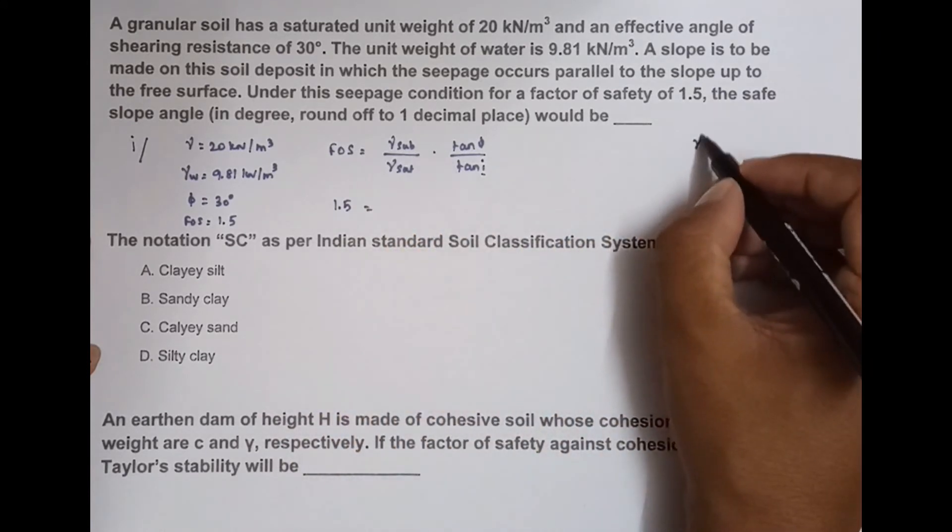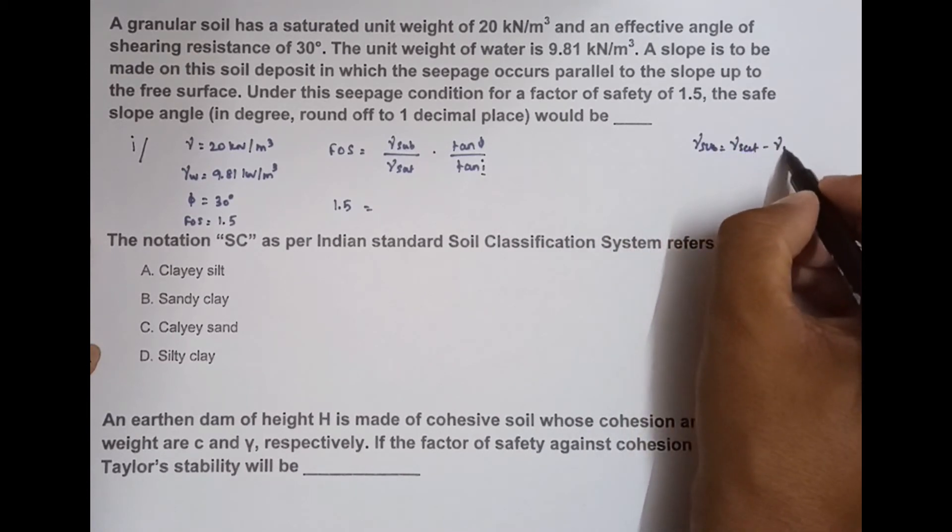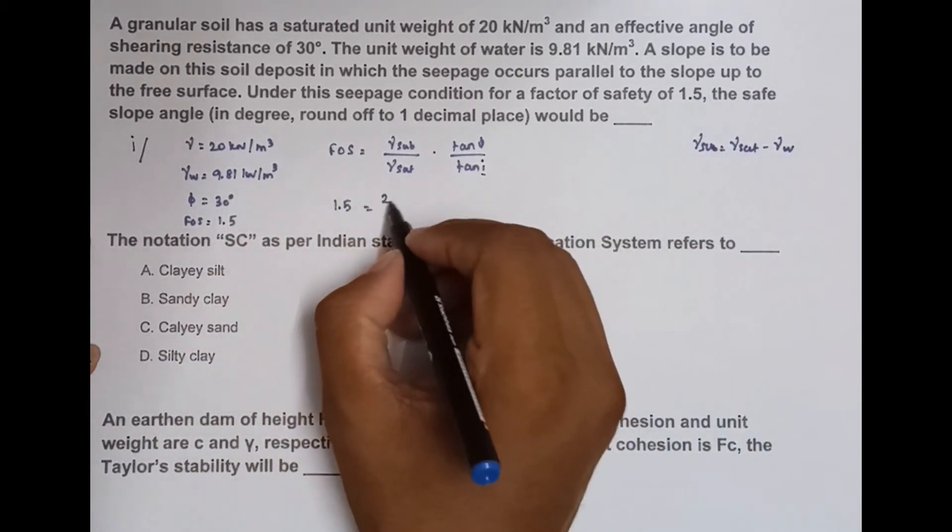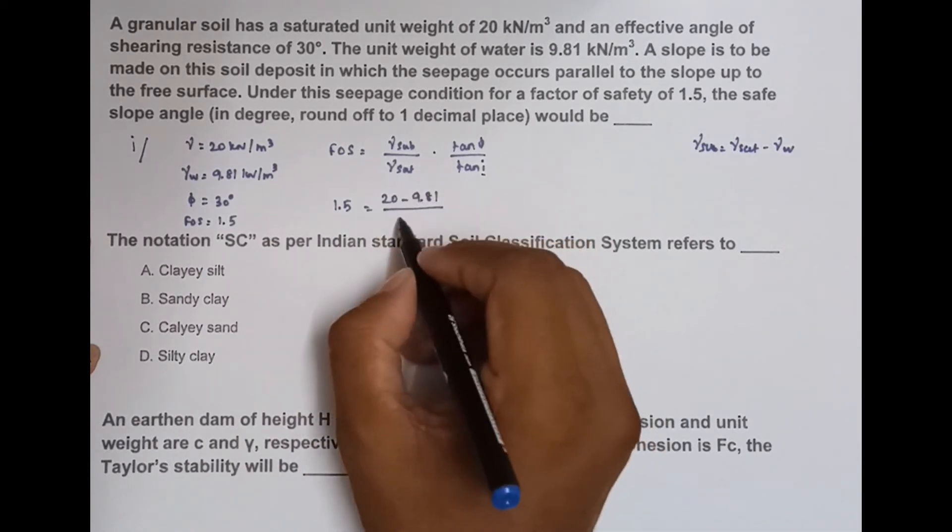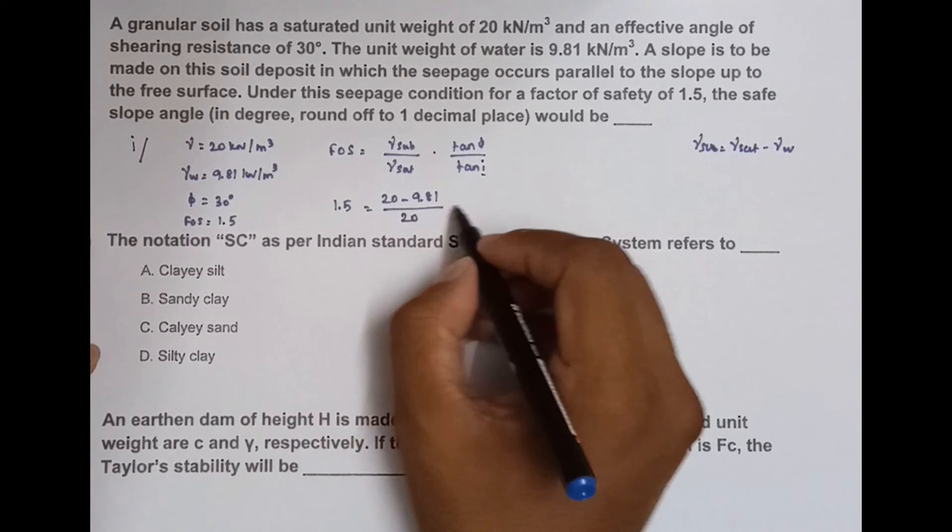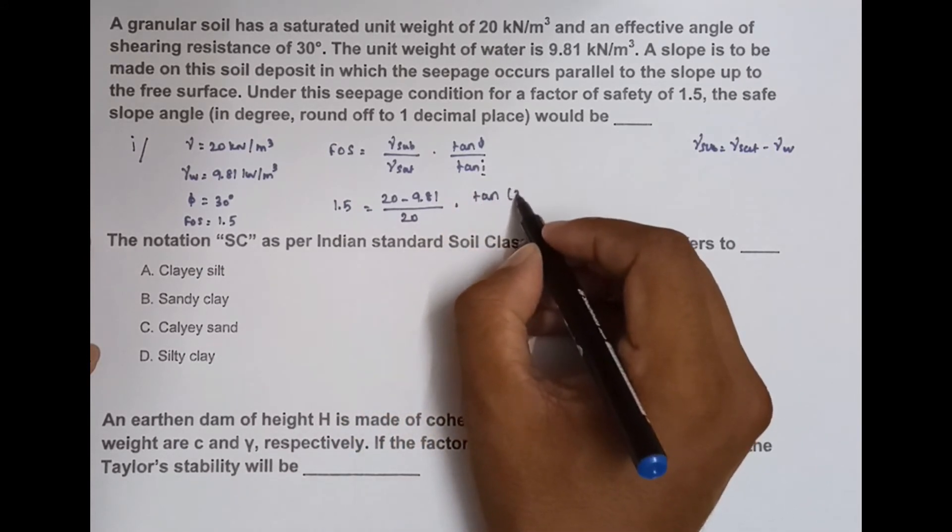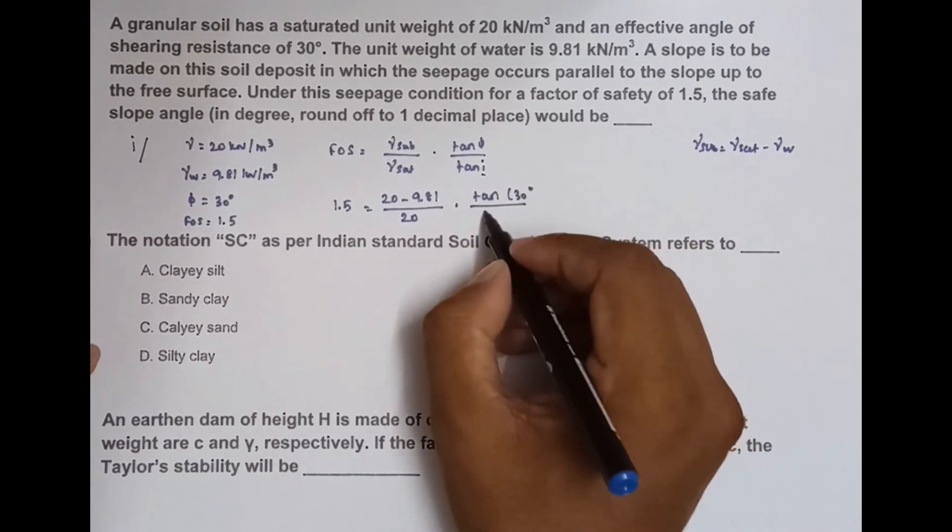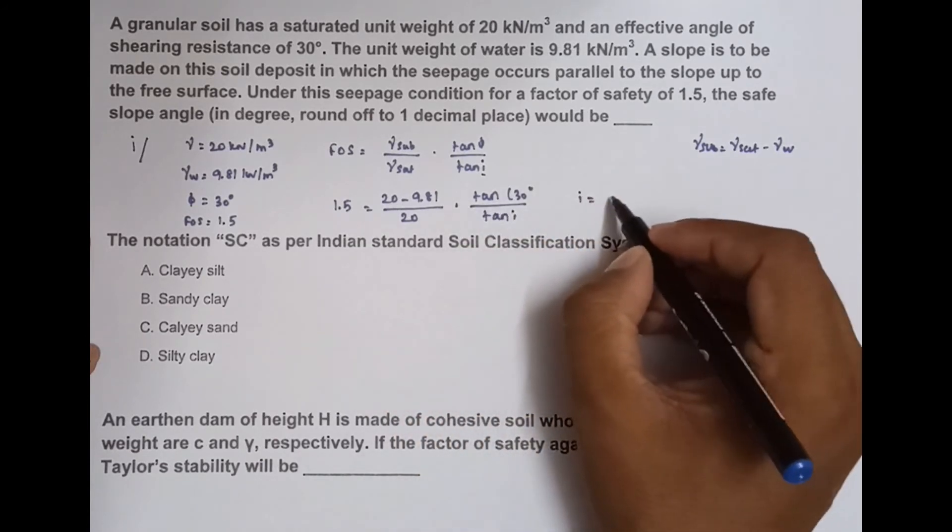Gamma submerged = gamma saturation minus gamma w, so 20 - 9.81 divided by gamma saturation (20) into tan φ (tan 30°) divided by tan i. Solving this equation, we get i = 11.0953. This is the value.